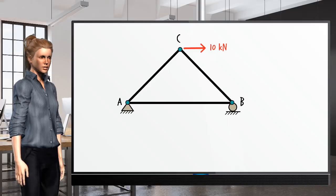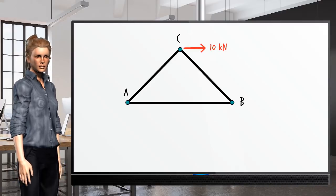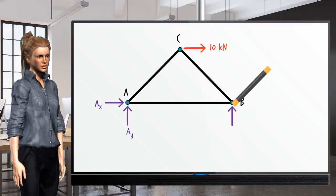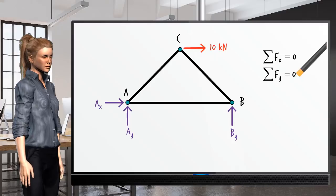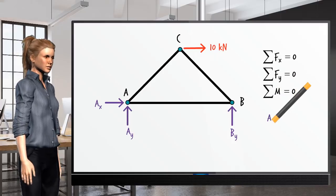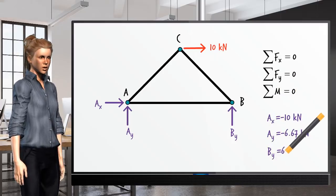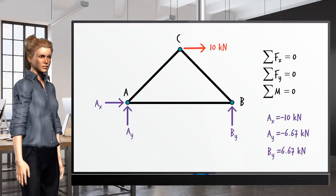Step 1: Draw the free body diagram for the entire truss. Then, use the three equilibrium equations to find the support reactions.